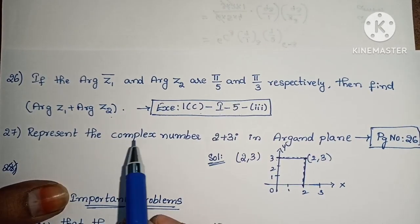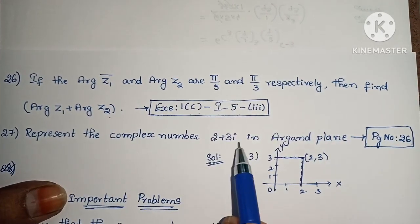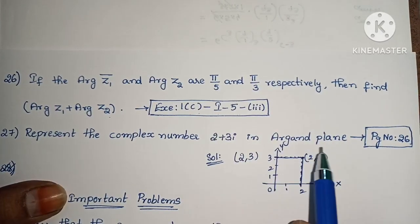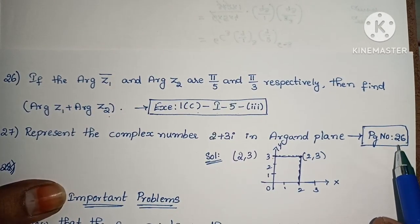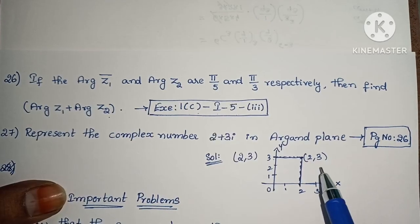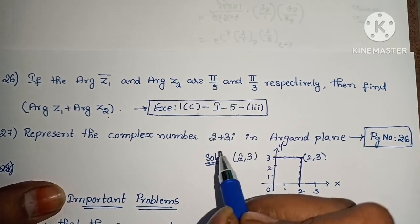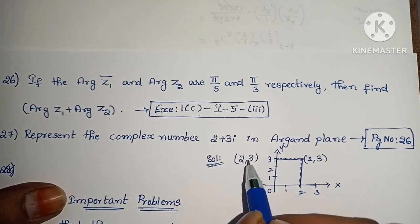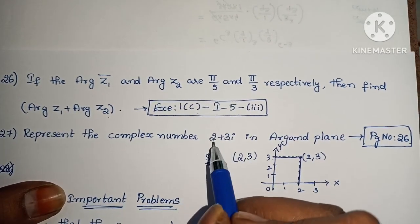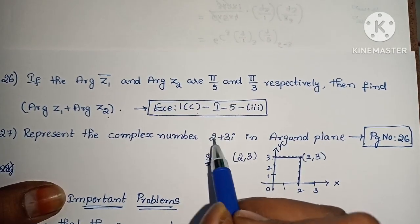Next, represent the complex number 2 plus 3i in the Argand plane. This is on page number 26. Just plot the point (2, 3) — mark 2 on the x-axis and 3 on the y-axis, and that represents z = 2 + 3i in the Argand plane.